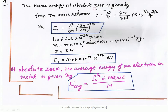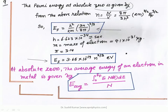The Fermi energy at absolute zero is given from the above relation N/V, which can be defined as EF = (h² / 2m) × (3n / 8π)^(2/3). At absolute zero temperature, the Fermi energy of the free electron is 3.65 × 10⁻¹⁹ × N^(2/3) electron volts. At absolute zero, the average energy of an electron in metal is given by the formula where we integrate the total energy from 0 to EF for all electrons divided by the total number.